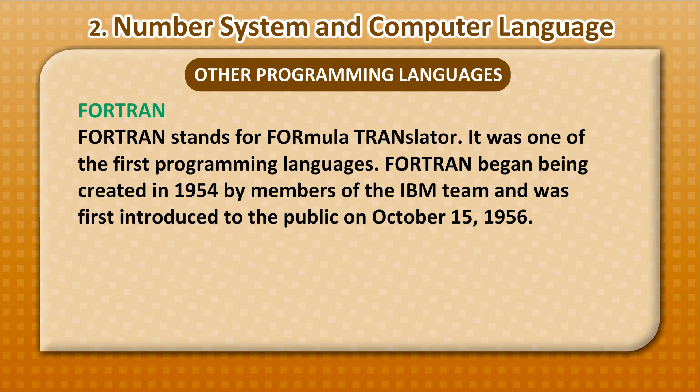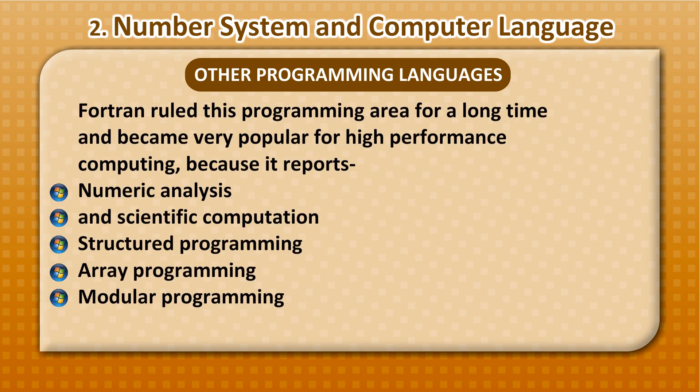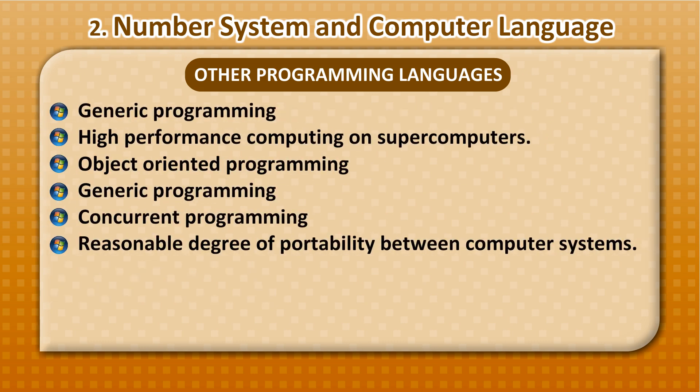It was one of the first programming languages. Fortran began being created in 1954 by members of the IBM team and was first introduced to the public on October 15, 1956. Fortran ruled this programming area for a long time and became very popular for high-performance computing because it supports numeric analysis and scientific computation, structured programming, array programming, modular programming, generic programming, high-performance computing on supercomputers, object-oriented programming, concurrent programming, and reasonable degree of portability between computer systems.